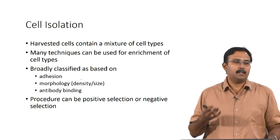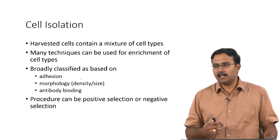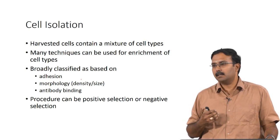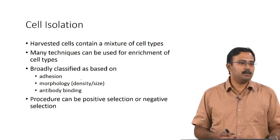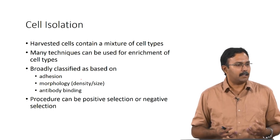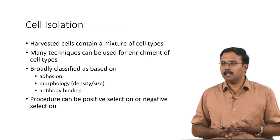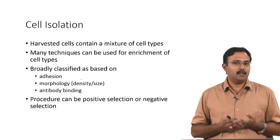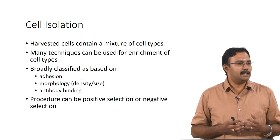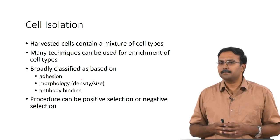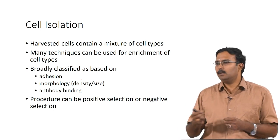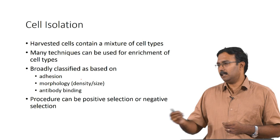The harvested cells contain a mixture of cell types because you have not done anything to specifically attract one cell type — mechanical isolation or enzymatic digestion retrieves all cells present in the tissue. Now you might want to use only one specific cell type. For example, if you want hepatocytes alone, you would have to separate them. There are many techniques to enrich these cells, dependent on adhesion properties, morphology (density and size), or antibody binding.